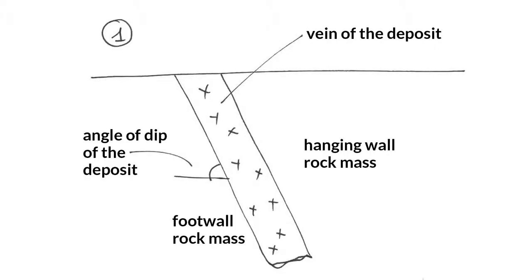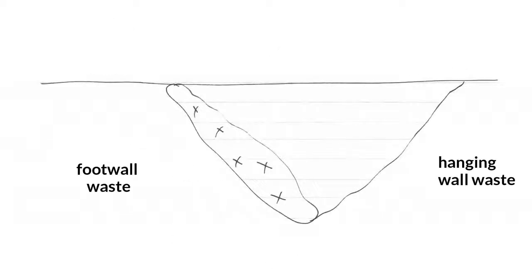The hanging wall is the underside of the wall rock overlying an ore body, and the foot wall is the top of the rock that underlies the ore body. The hanging wall must be removed to expose the ore body, hence the hanging wall rock becomes hanging wall waste. Once the inclined ore body is removed, it exposes the foot wall, which is the rock below the ore body.